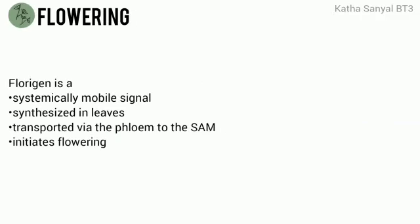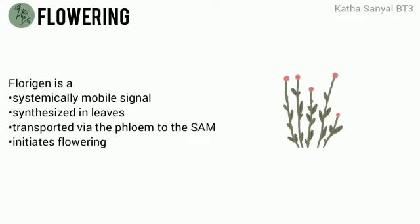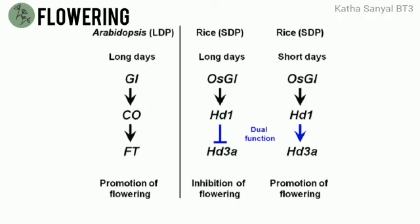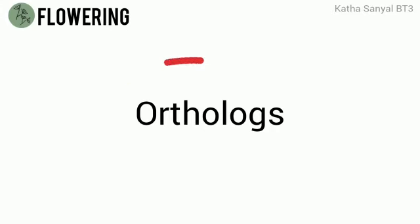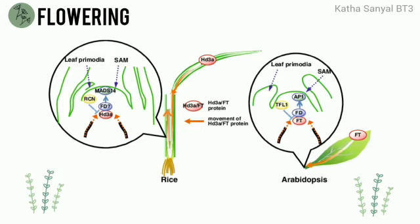Florigen is a systemically mobile signal that is synthesized in leaves and then transported via the phloem to the shoot apical meristem where it initiates flowering. In Arabidopsis, the Flowering Locus T (FT) gene encodes the flowering hormone, and in rice the hormone is encoded by HD3A genes, thereby making these genes orthologues. It was found through the use of transgenic plants that the HD3A promoter in rice is located in the phloem of the leaf along with the HD3A mRNA.